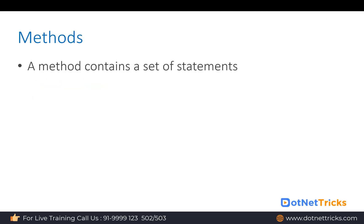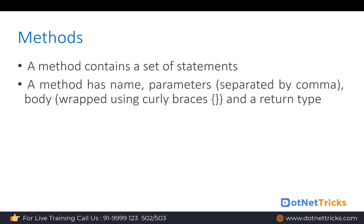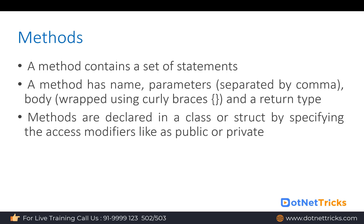A method contains a set of statements, and with methods we can reuse code. A method has a name, parameters separated by commas, a body wrapped in curly braces, and a return type. Methods are declared within a class or struct by specifying an access modifier like public, protected, private, or internal.